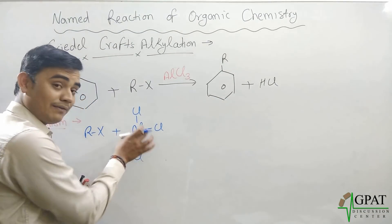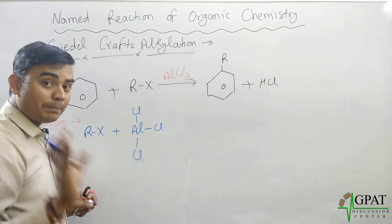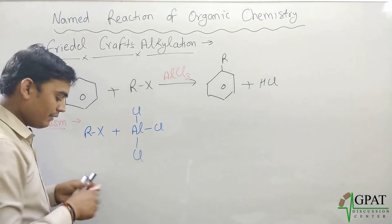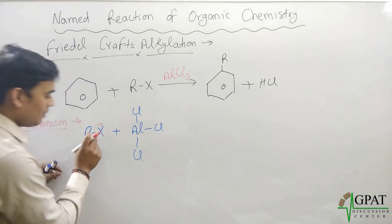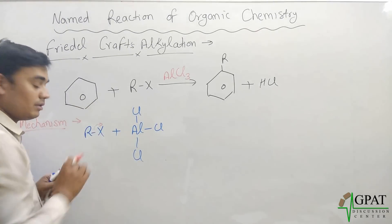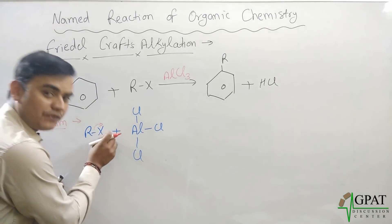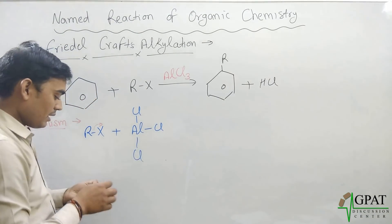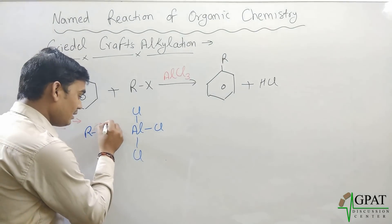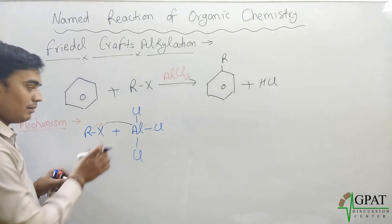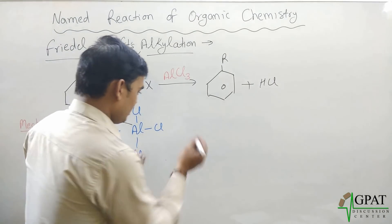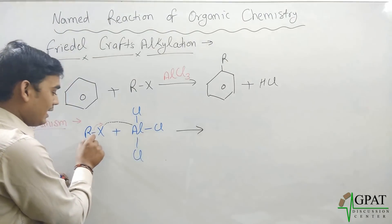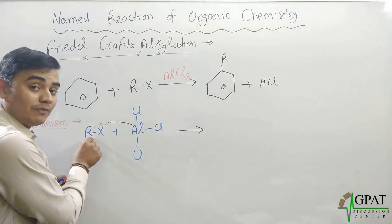The structure of the Lewis acid aluminium chloride is such that it has an empty p orbital. The alkyl halide reacts with this Lewis acid: the halide group has somewhat greater electronegativity, so the C–X bond shifts toward the halide group. Since aluminium has an empty p orbital, the halide forms a partial bond with the aluminium.